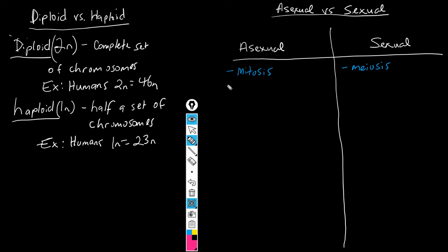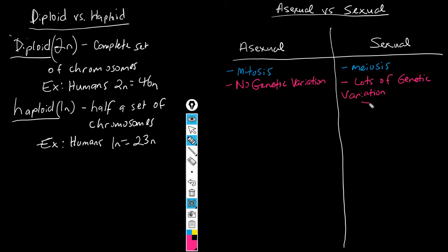One of the main things that differentiates these two processes is that asexual reproduction has absolutely no genetic variation, while sexual reproduction has lots of genetic variation. During the video notes, you learned two words we want to associate with sexual processes and genetic variation: independent assortment and crossing over.